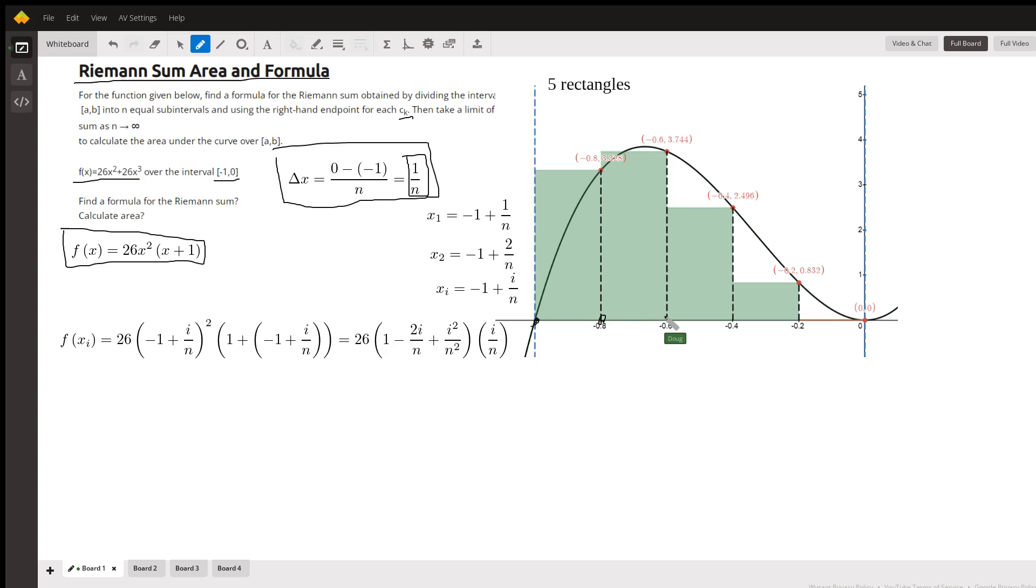To get to the ith right-hand endpoint, you add on i of those widths. So there is a formula in terms of i and n for the ith right-hand endpoint.